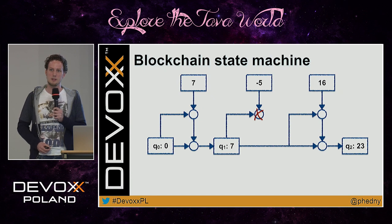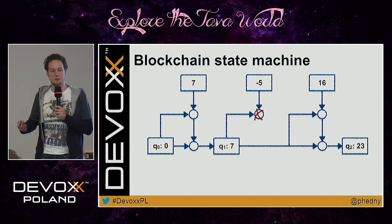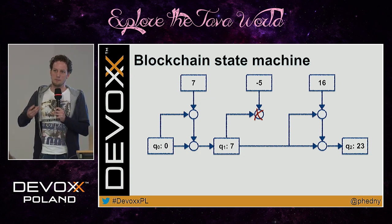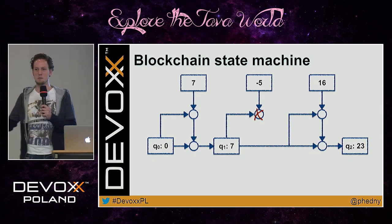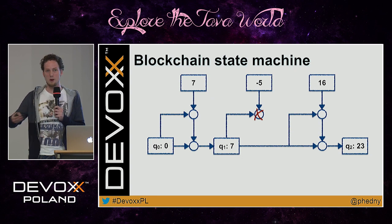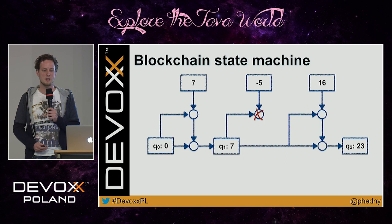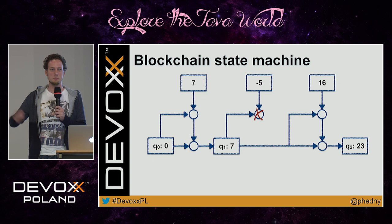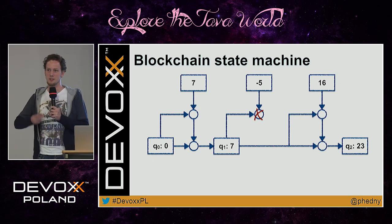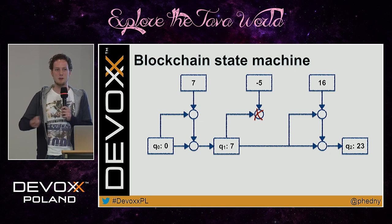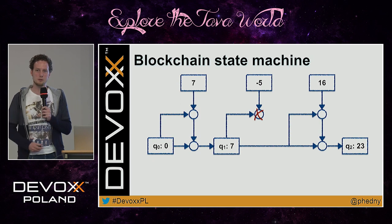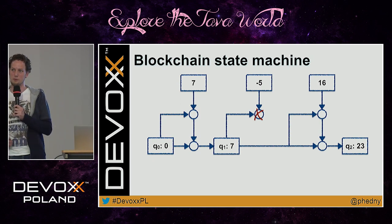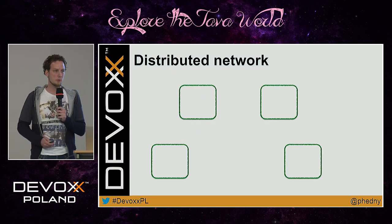In a money transfer context, the state contains information about balances for accounts — for example, Mark has 7 euros and Gene has 12 euros. A message says 'transfer 5 euros from Mark's account to Gene's account.' The validation function checks whether Mark has at least 5 euros; if not, it's blocked. In this case it is valid, so the transition function removes 5 euros from Mark and adds 5 euros to Gene. That is our first ingredient.